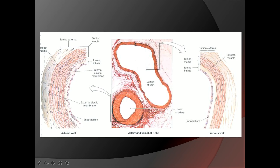In summary: tunica intima from inside — endothelium (simple squamous epithelium), sub-endothelial connective tissue, internal elastic lamina; tunica media — concentrically/spirally arranged smooth muscle fibers, collagen and elastic fibers, fenestrated elastic sheets, external elastic lamina; tunica adventitia — fibroblasts, collagen fibers, elastic fibers, vasa vasorum, and nervi vasorum. A comparison of the arterial and venous walls is shown.